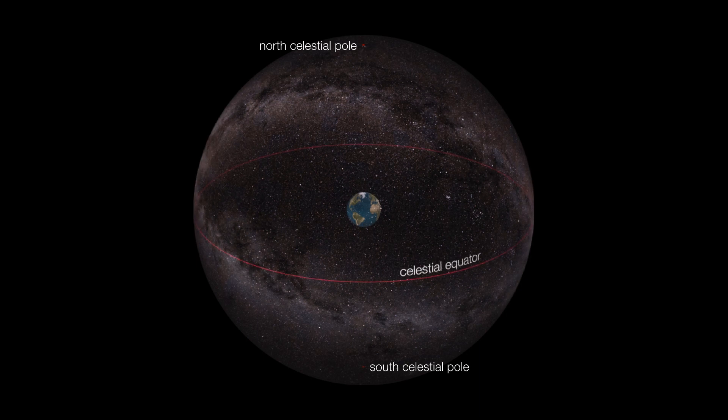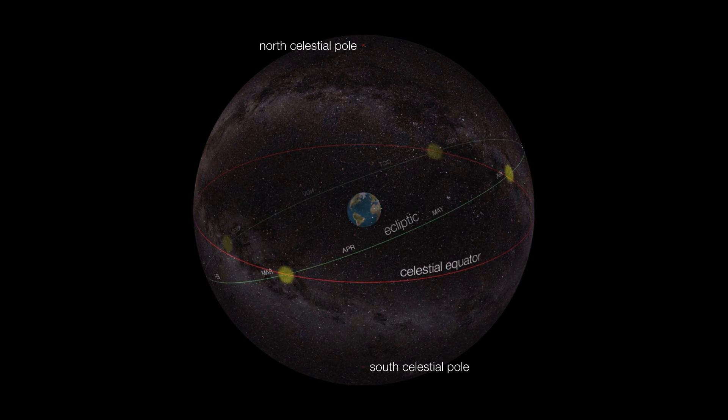But over the course of a year, the sun appears to follow a path moving eastward around the sky, and this path is called the ecliptic. I have illustrated some key positions of the sun throughout the year, and the month names represent where the sun appears to be with respect to the background stars at different times during the year.